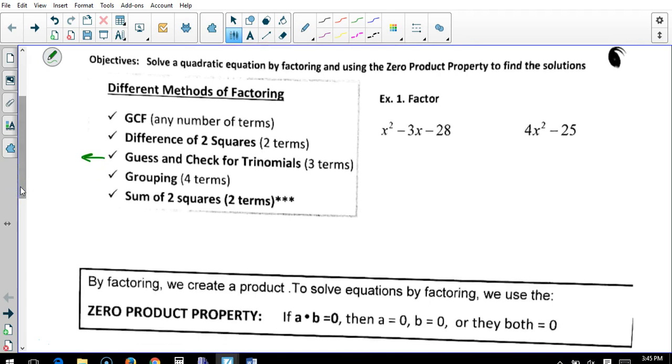So x squared minus 3x minus 28. Let's write it down as x times x. And we need two numbers that multiply to be 28, differ by 3. Obviously, 7 and 4. I want one negative and one positive, so that becomes negative and that becomes positive.